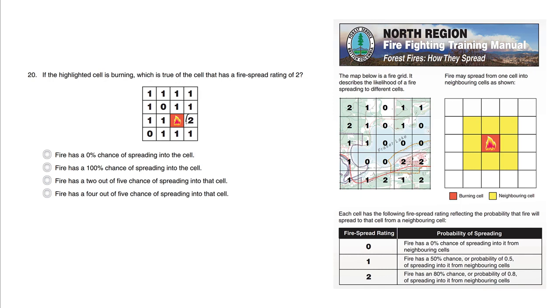So we're talking about this cell here. This cell here, the one with the number 2, has a 0% chance of spreading into that cell.